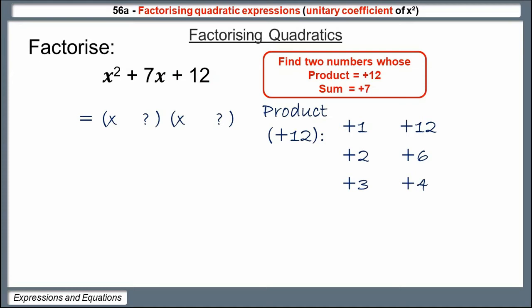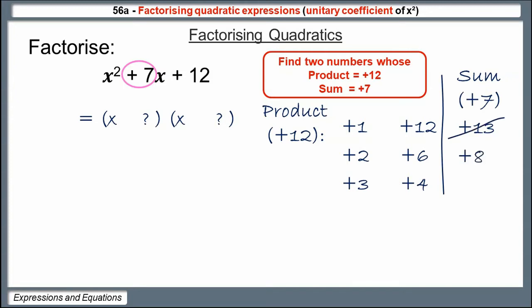Now we find the particular pair that adds to make plus 7. Plus 1 plus 12 is plus 13 — no good. Plus 2 plus 6 is plus 8 — no good. Plus 3 plus 4 is plus 7 — that's the one we want. So the numerical values in each bracket are plus 3 and plus 4, giving us the solution: bracket x plus 3, bracket x plus 4.